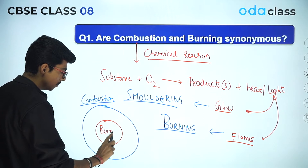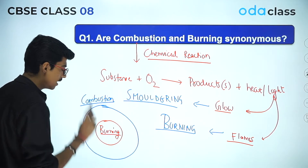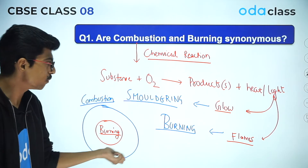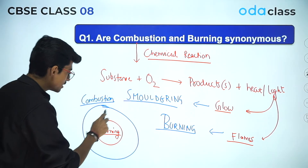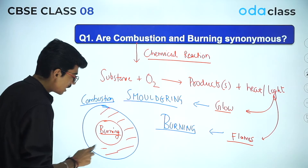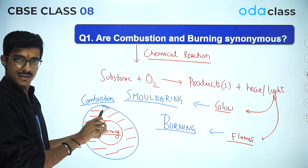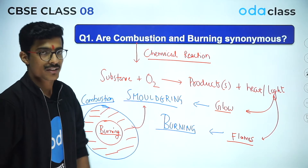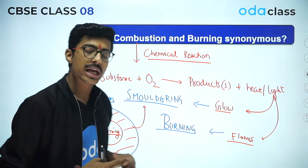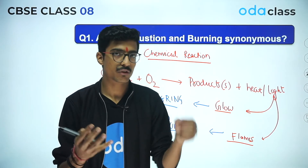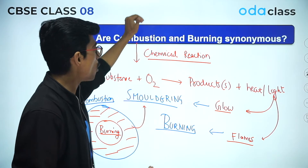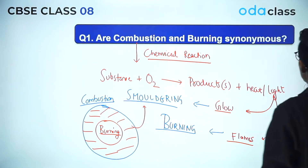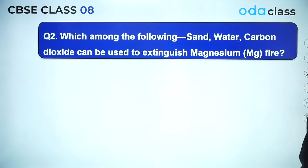So burning is a type of combustion. It's not like combustion and burning are synonymous. There can be instances where a particular case is a type of combustion but that's not burning. If we make a Venn diagram relationship: combustion is the bigger set, and burning is a subset of combustion. So all burning is combustion, but all combustion is not burning — we proved that smouldering is also possible. That smouldering region is combustion but not burning.